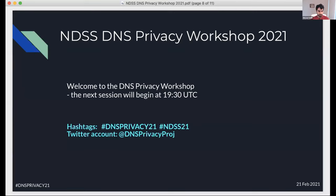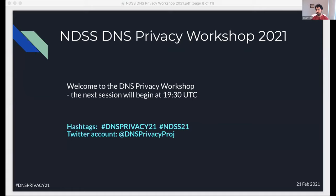All right, it is 11:30 Pacific, so let's begin. This is our third and final session from the DNS privacy workshop, which will be followed by a breakout session. This section focuses on novel work and recursive-to-authoritative DNS encryption. We have three talks. First up, we have Liang Wong from Princeton University talking about an in-progress paper: programmable in-network obfuscation of DNS traffic.